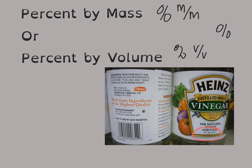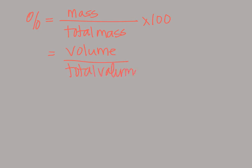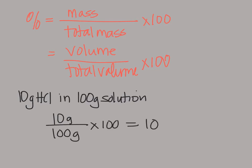This is pretty simple to figure out. We're going to figure out how much stuff is in 5% acidity vinegar — the acid in vinegar is acetic acid. To find the percent, you take the mass divided by the total mass times 100, or the volume divided by the total volume times 100. For example, if we have 10 grams of HCl in 100 total grams of solution, we take 10 grams divided by 100 grams times 100, and you get a 10% solution.